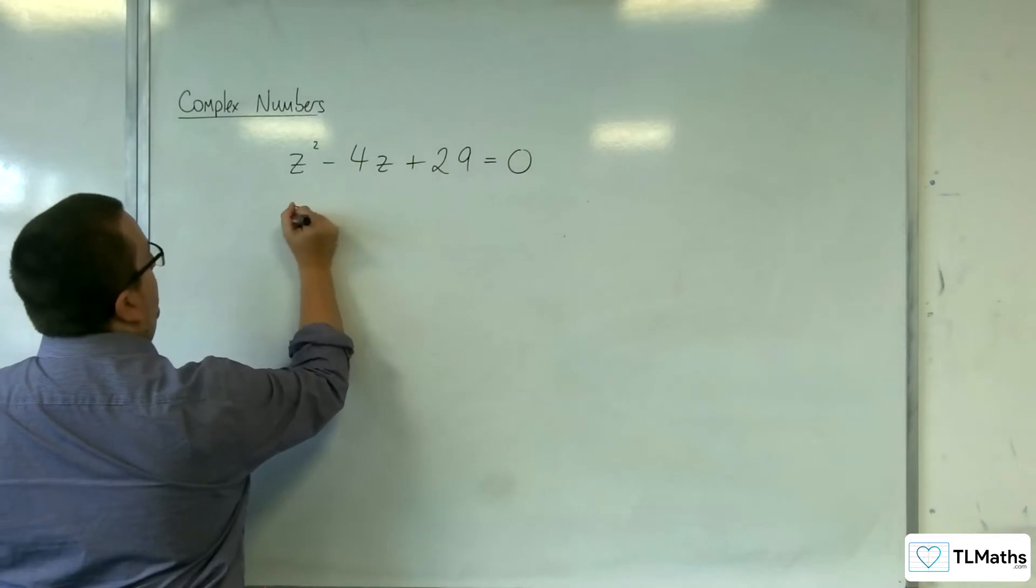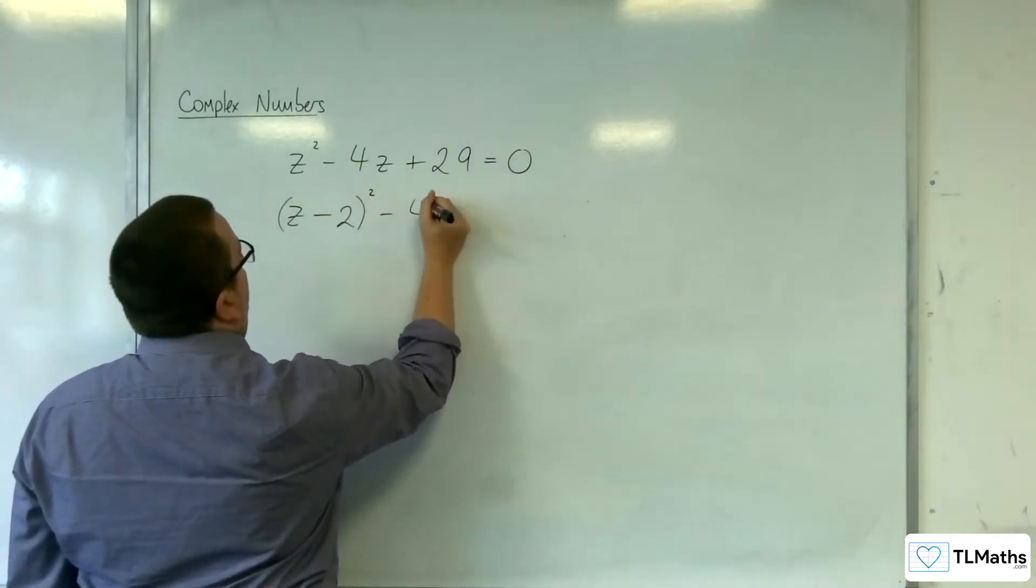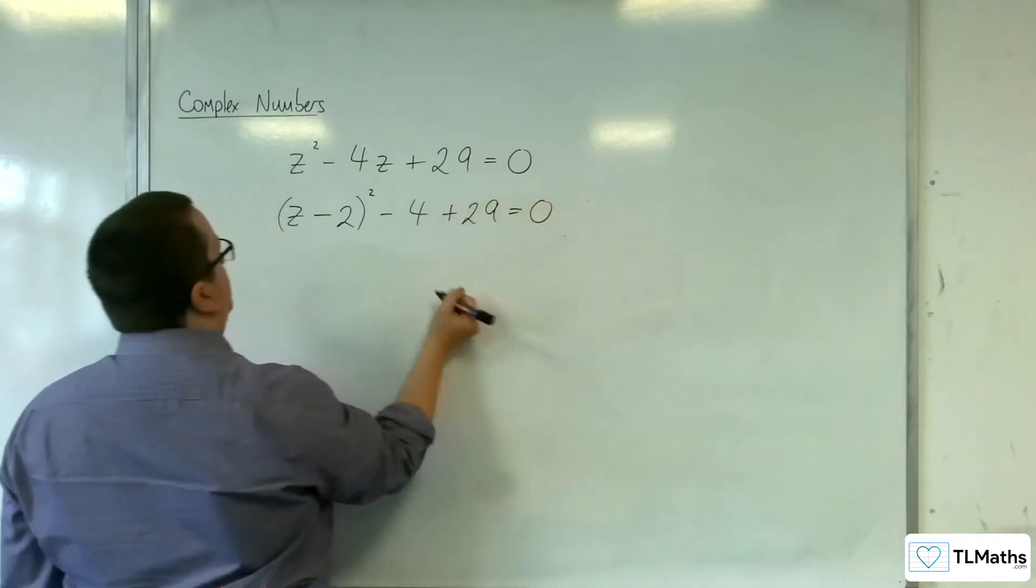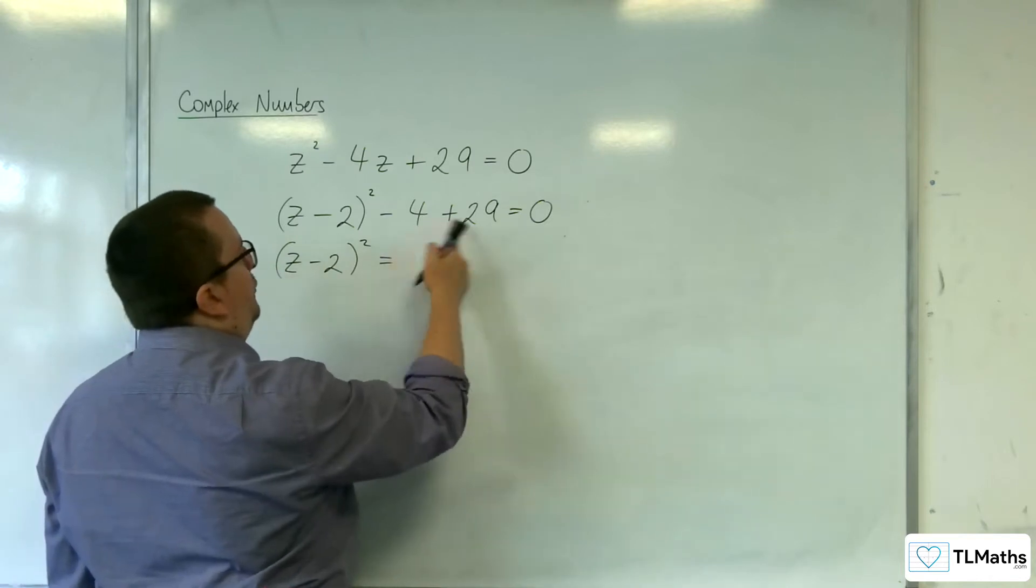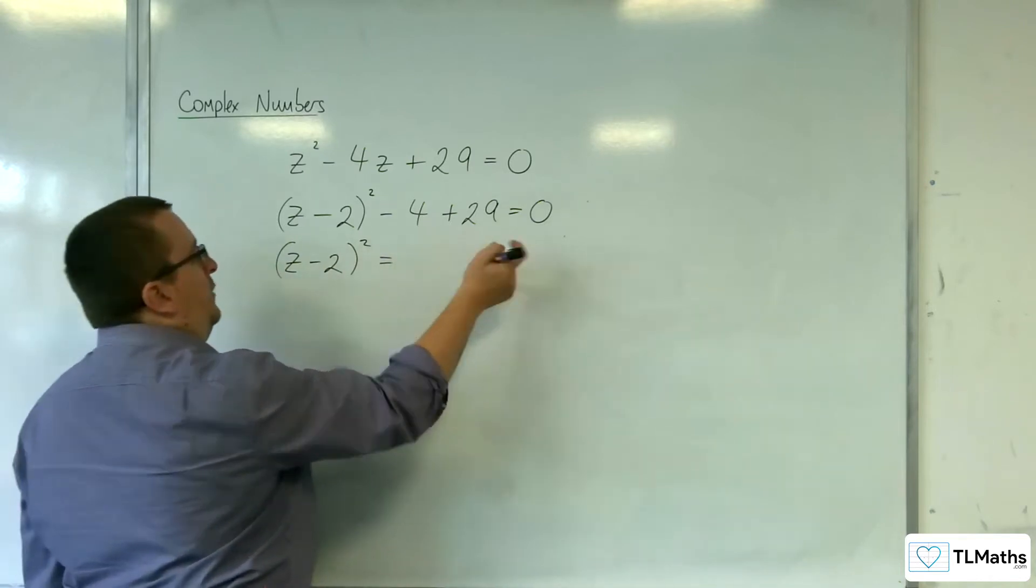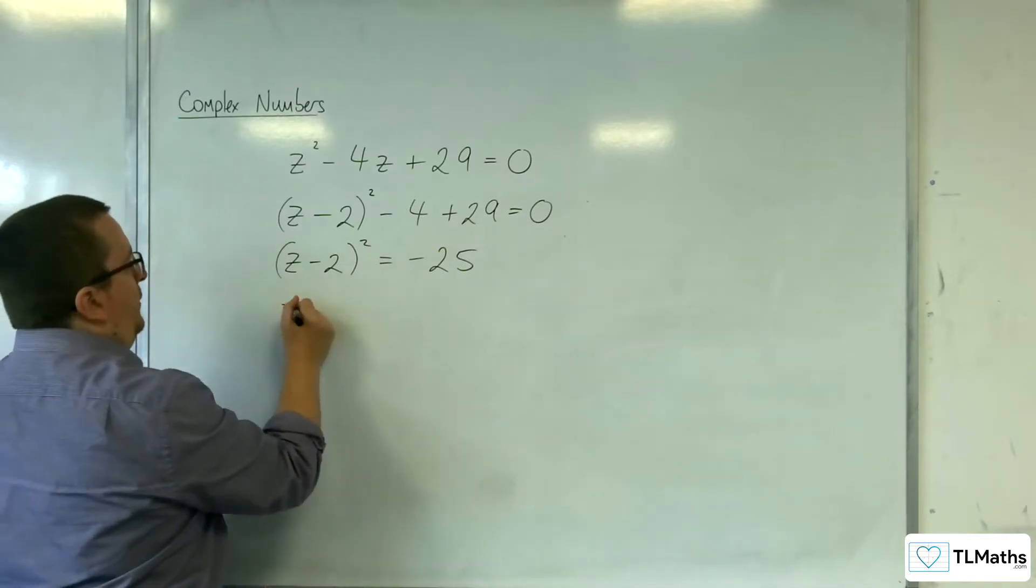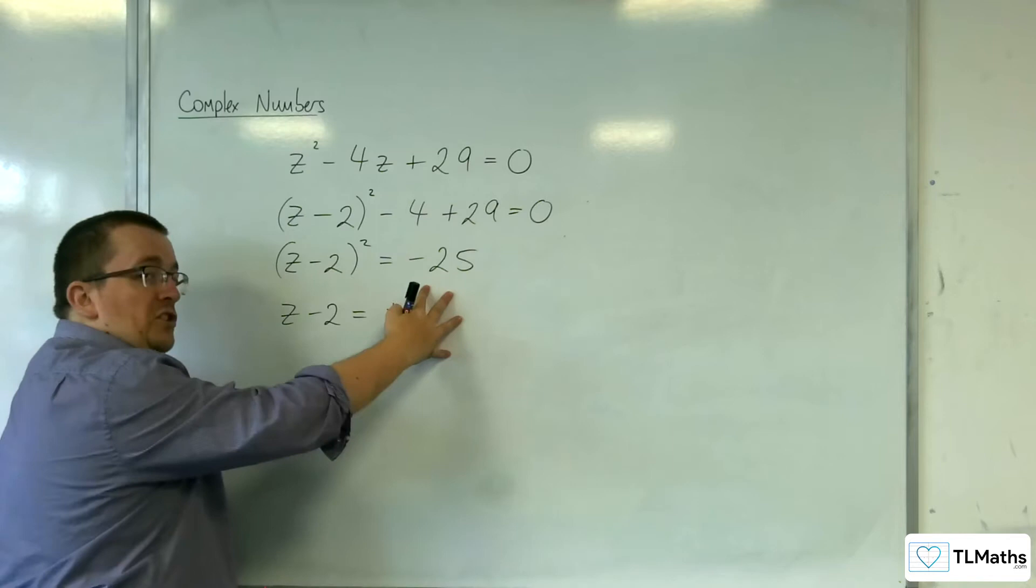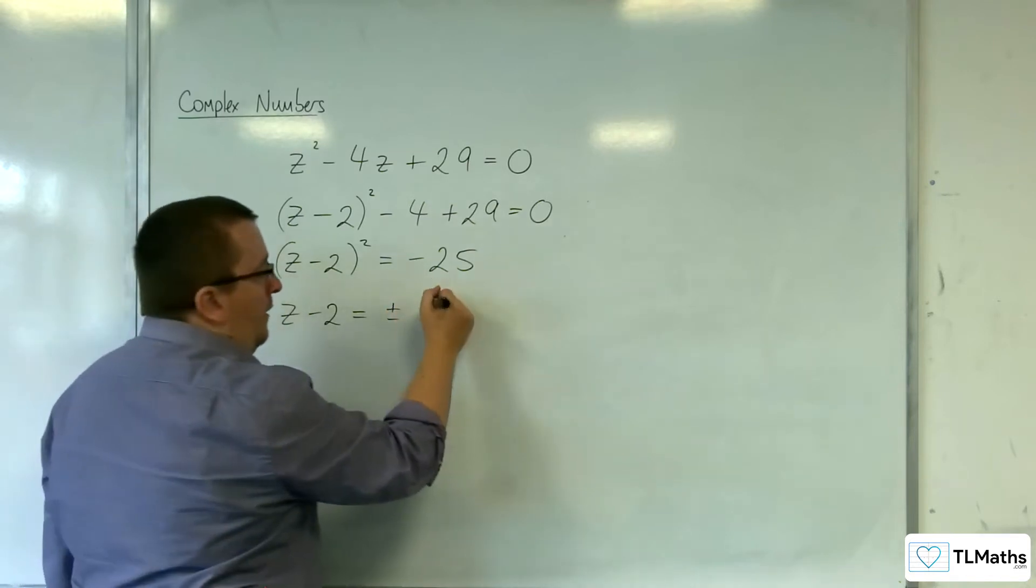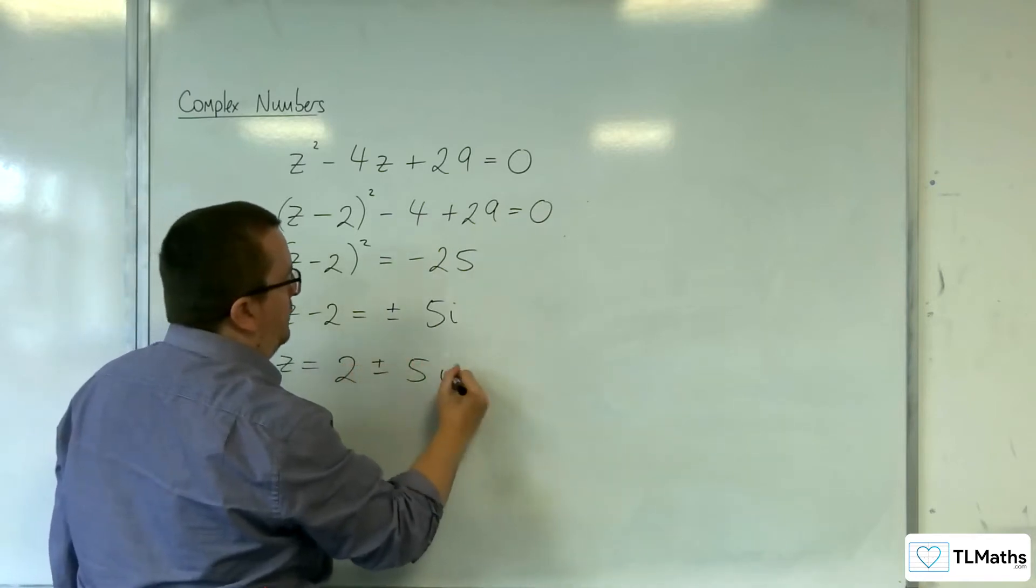So (z - 2)² - 4 + 29 = 0. We have (z - 2)² minus 4 plus 29 is 25, so we've got minus 25. Then we want to square root both sides. So z - 2 is going to be plus or minus the square root of -25, which is 5i. And so z = 2 ± 5i.